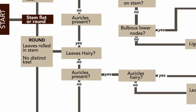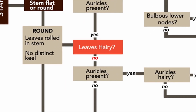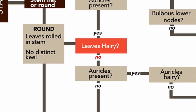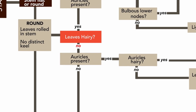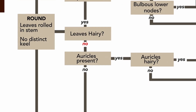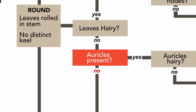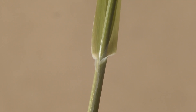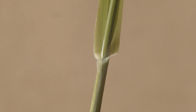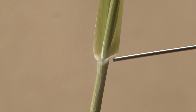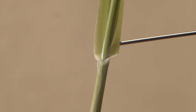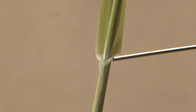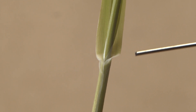With canary grass you will find that there are actually no hairs present on the leaves. The next thing you're going to look for is whether auricles are present or not. With canary grass it does not have auricles. However, you will see another quite distinctive feature in that as the plant matures, at the base of the leaf around where the auricles would be, it fades to almost white.